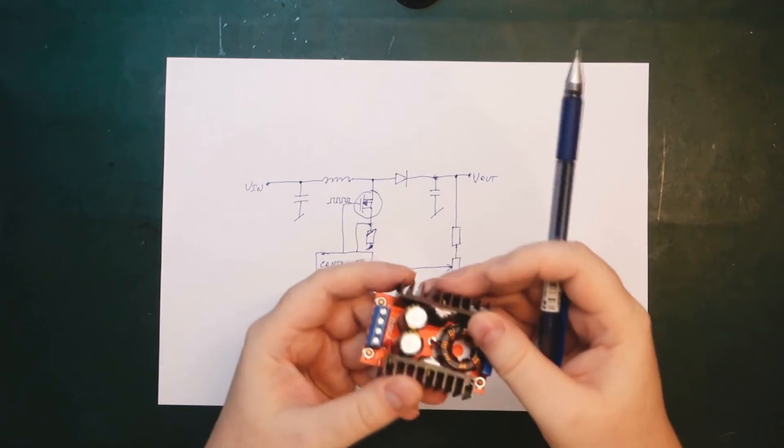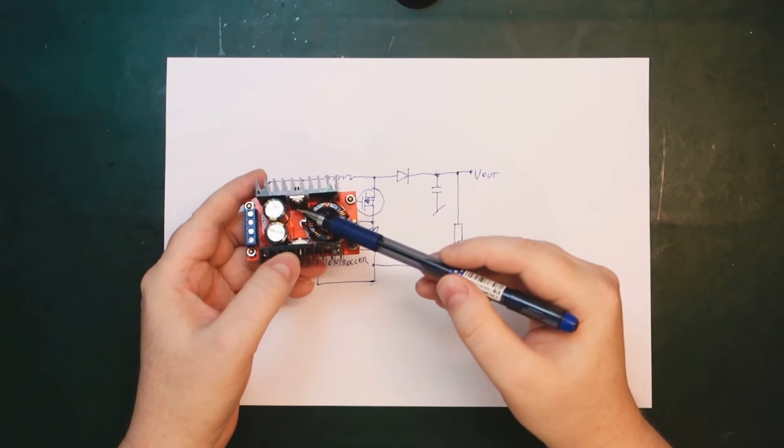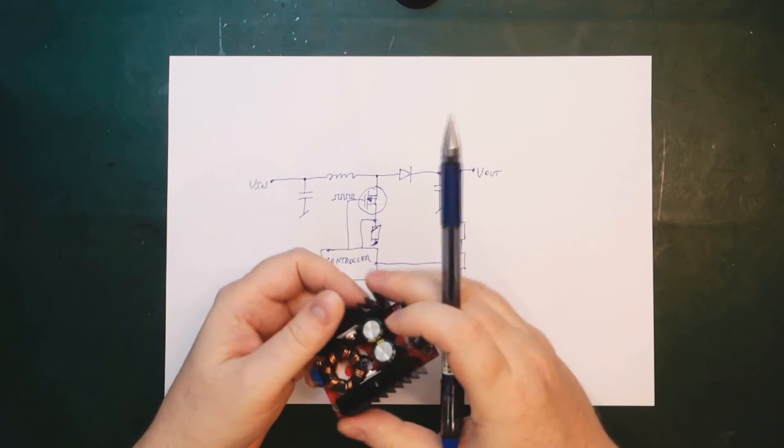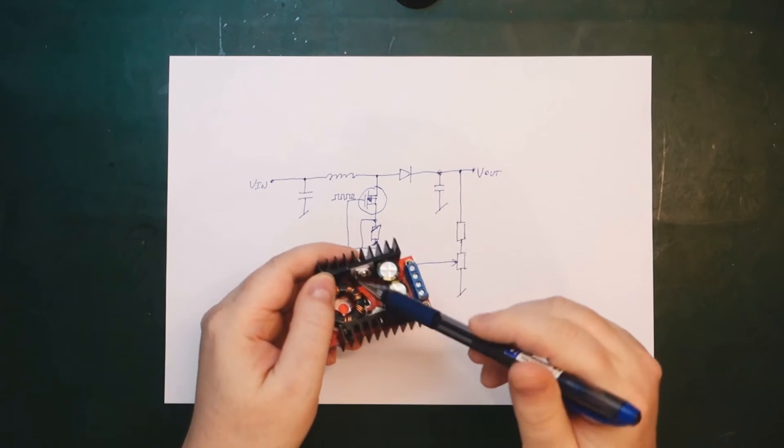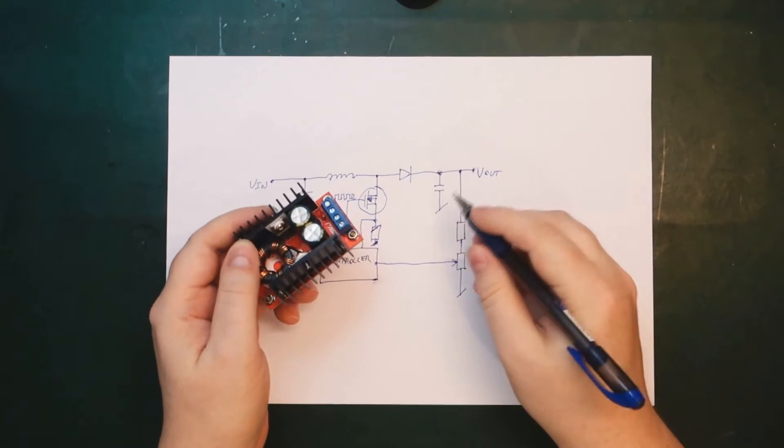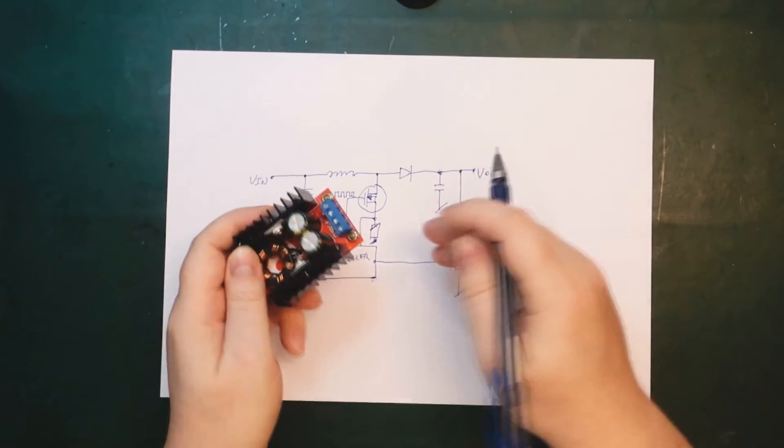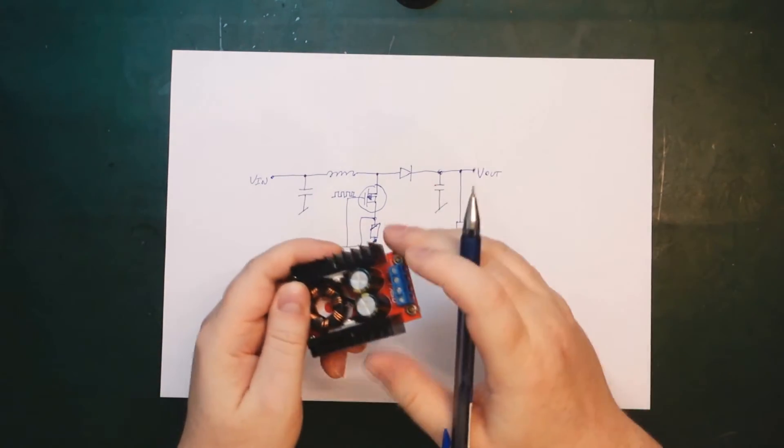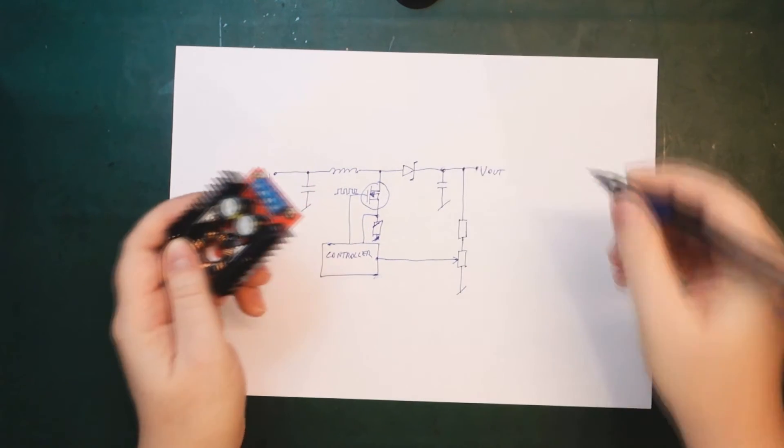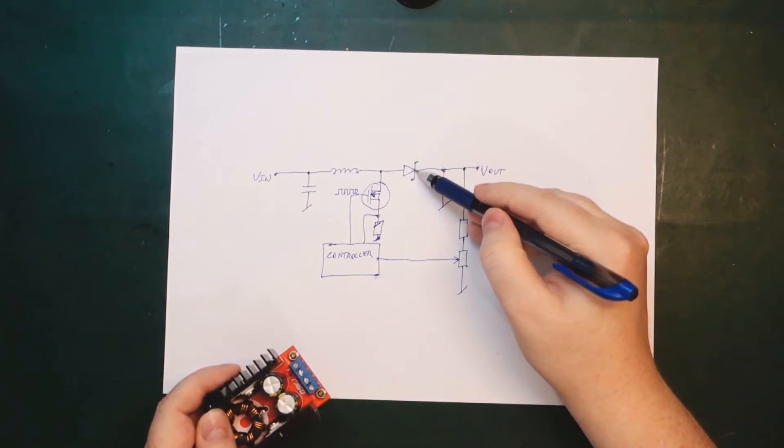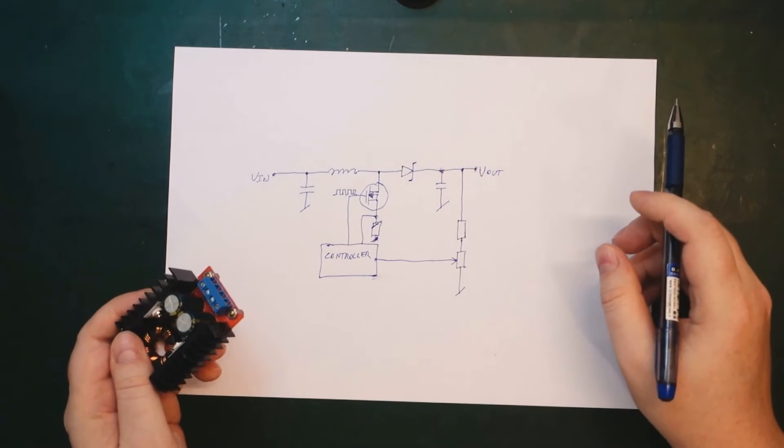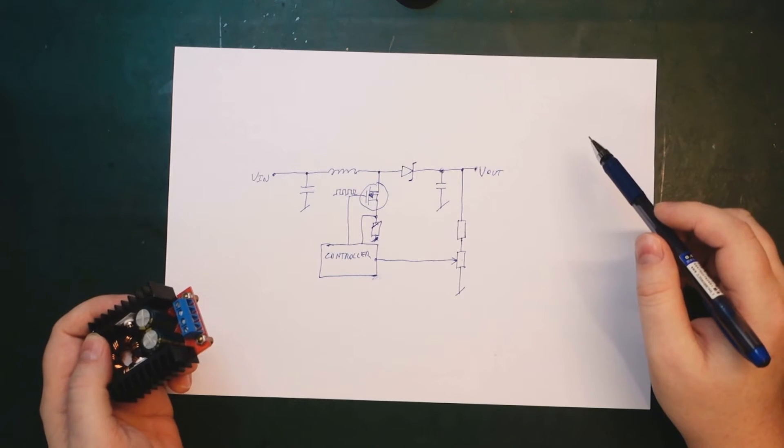Then we have our MOSFET over here. And we have a diode over here on the other heatsink. It's probably a Schottky diode. Really we should draw it something like this. Just for minimal forward voltage drop. Let's try hook it up and do some measurements on it.